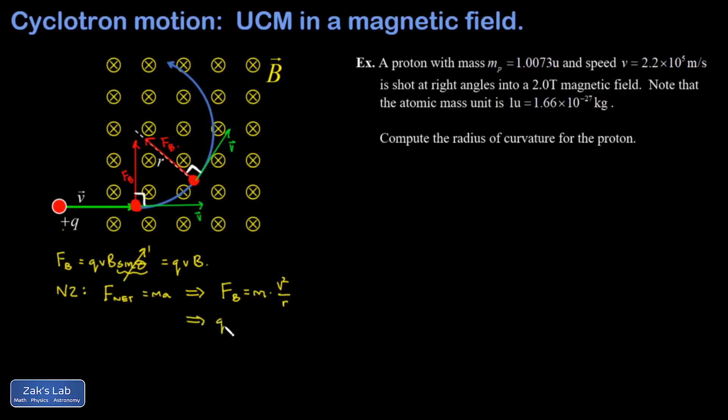I plug in my magnetic force, cancel one factor of v. My motivation here is to solve for the radius of curvature. So I get mv over qB.